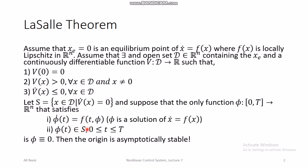If the only function that satisfies these two properties simultaneously is φ = 0, then the origin is asymptotically stable. Notice what LaSalle has done: in Lyapunov's theorem for asymptotic stability, V̇ must be strictly less than 0. But LaSalle found conditions under which V̇ is not required to be strictly less than 0 — it can be less than or equal to 0 — and you can still prove asymptotic stability of the origin.